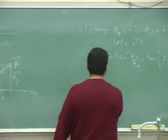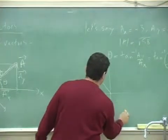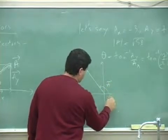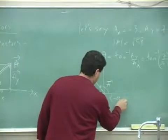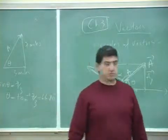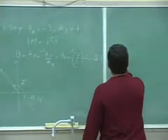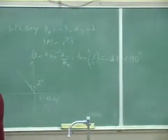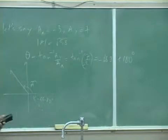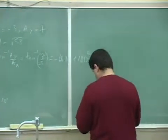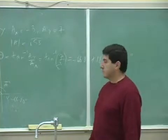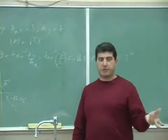What the calculator is really giving you is the angle negative 66.80 degrees, as if the vector were in the fourth quadrant. To get the actual answer for a second-quadrant vector, you add 180 to that result. That's the correction you have to make in order to get to the right quadrant.